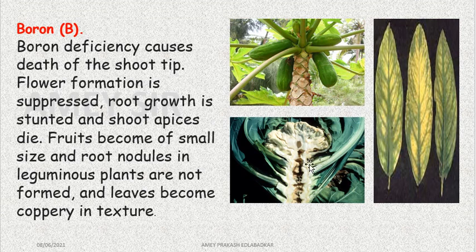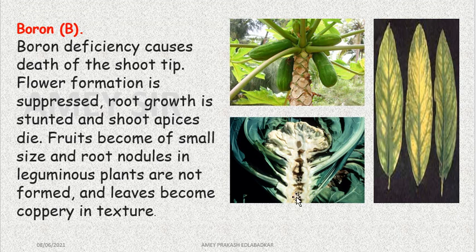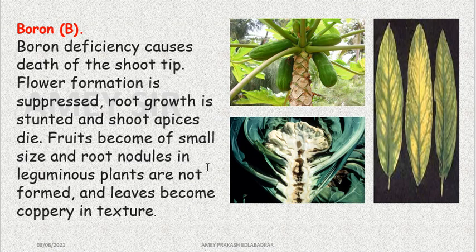Boron, even though required in small amounts, has very important deficiency symptoms. The shoot tip will die — you can see here this is cauliflower — stunted growth occurs, the entire shoot part becomes infected from inside, growth is suppressed, fruits become small. This is a papaya plant — the fruit size has become small like grapes. Root nodules do not develop in leguminous plants, and the leaf texture becomes coppery.